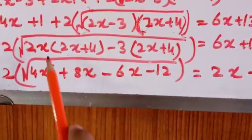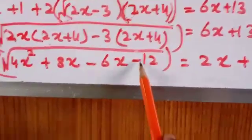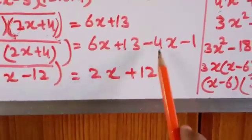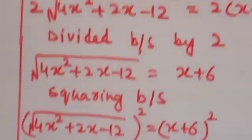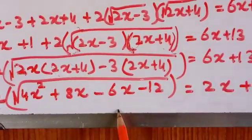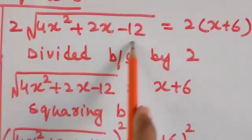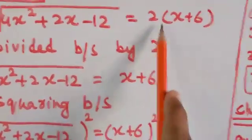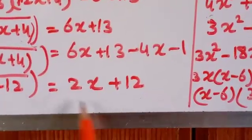Expanding: 4x² + 8x − 6x − 12, which simplifies. Subtracting 2 from both sides gives 2·√(4x² + 2x − 12) = 2x + 12. Taking common factor: 2·√(4x² + 2x − 12) = 2(x + 6).